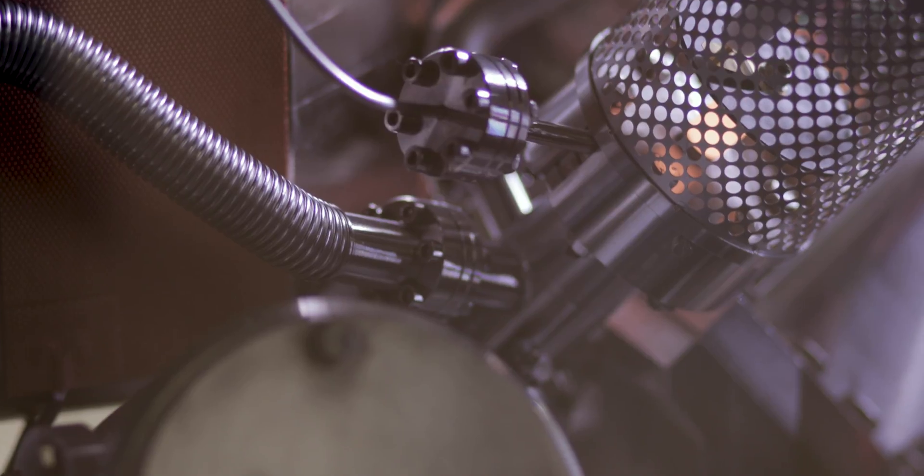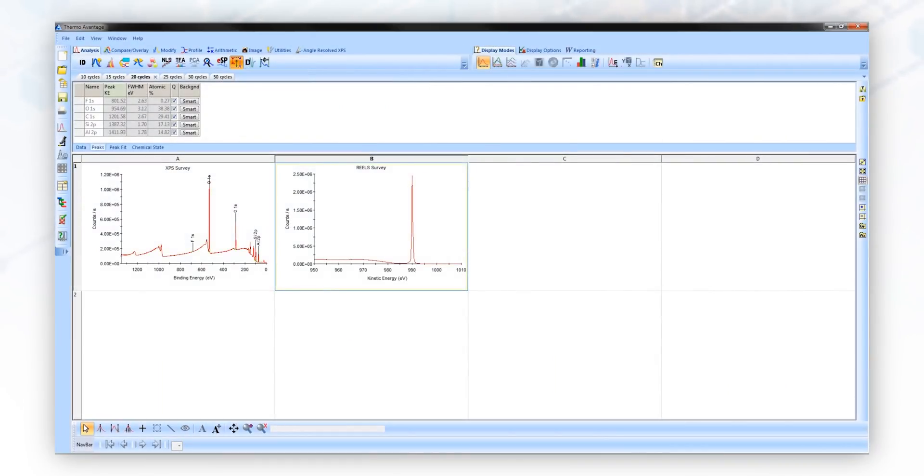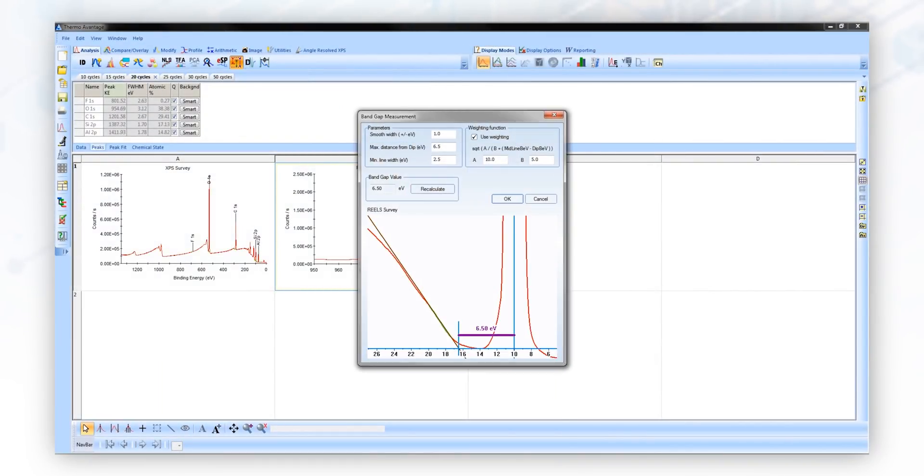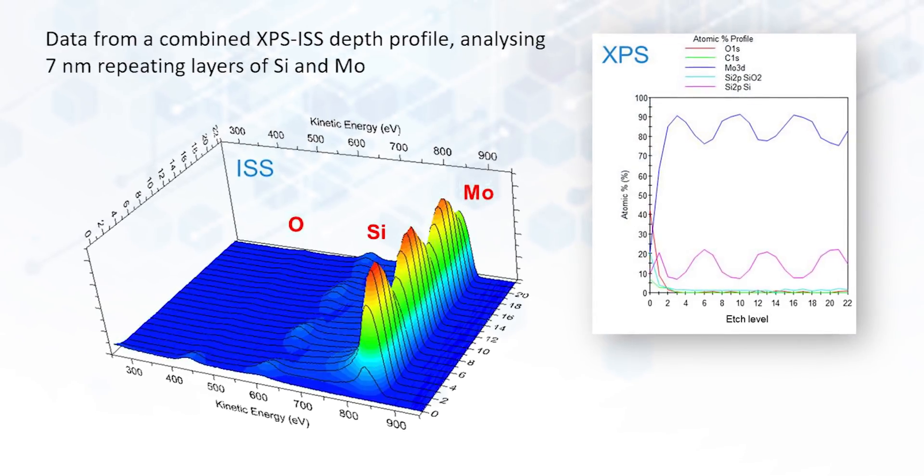XPS, of course, gives you composition and chemical bonding information. Reels gives you bandgap information, for example. ISS can give you information from the top monolayer and give you a coverage analysis.